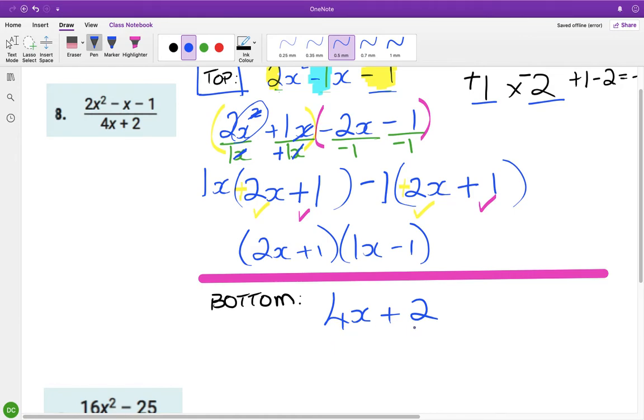So is there a common factor between 4 and 2? There is, it's 2. Open up the bracket. I'm going to divide by 2 here, and divide by 2 here. So 4 divided by 2 is 2, and then you have the x plus, oh sorry, this is positive 2, so sign is the same. So plus, and 2 divided by 2 is 1. And that's my bottom line.